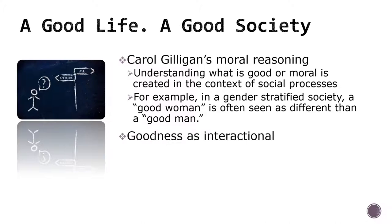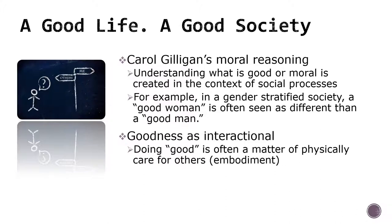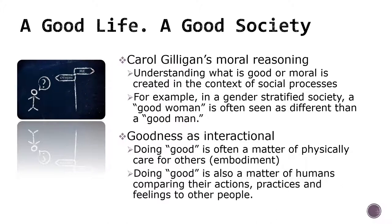So, goodness is found in our interactions as human beings. But this has further implications for understanding a good life or even a good society. We interact as physical beings — what Holmes calls embodiment. Such physical interactions inevitably include caring. One possible understanding of a good life is a life of caring for others. This is a strong basis for optimism because it suggests that a good society emerges from people caring for each other. If goodness is interactional, it is also born of people comparing their actions, practices, and feelings to other people. This certainly puts sociology in the frame for helping us understand how humans can live a good life and create a good society.